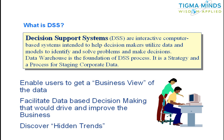Now let's talk about the bookish definition of DSS. DSS — Decision Support System — is an interactive computer-based system intended to help decision makers, meaning higher management, to utilize data and models to identify and solve problems. The key point here is: model to identify and solve problems.